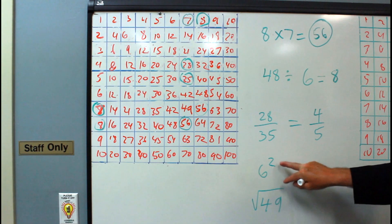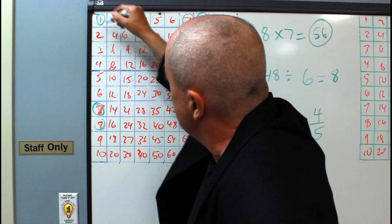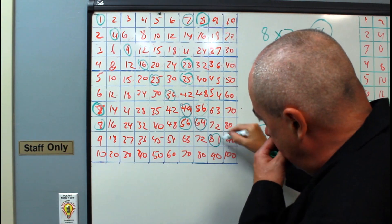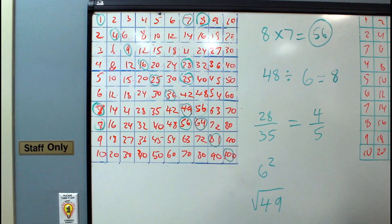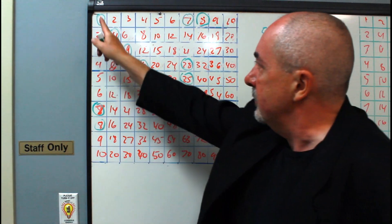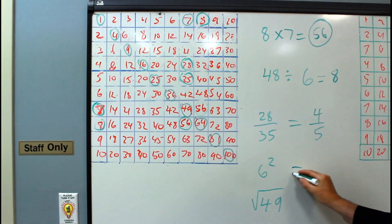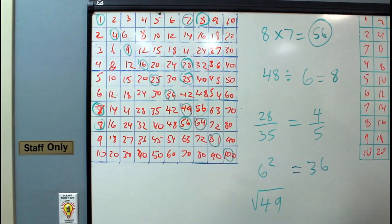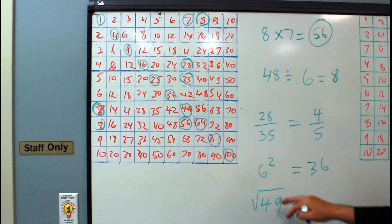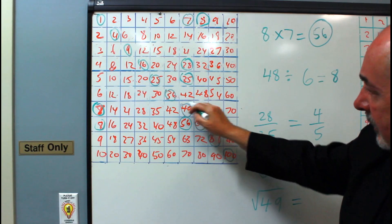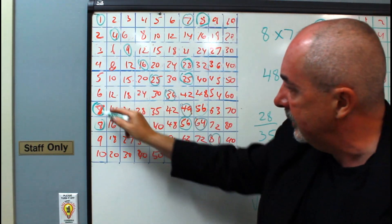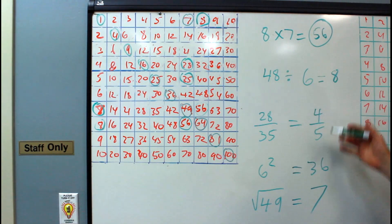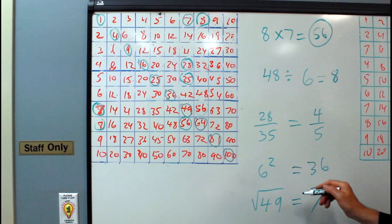You can do any square numbers up to 10 using this grid, because the square numbers make a nice diagonal from one corner to another. For 6 squared, either count six steps — 1, 2, 3, 4, 5, 6 — to get 36, or find 6 and 6, join them up, and get 36. For square roots, the square root of 49: find 49 on the diagonal, move out to either the top or the side, and your answer is 7. So the grid handles multiplication, division, some fractions in lowest terms, and basic squares and square roots from 1 up to 100.